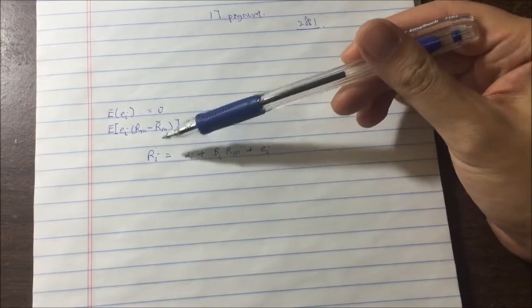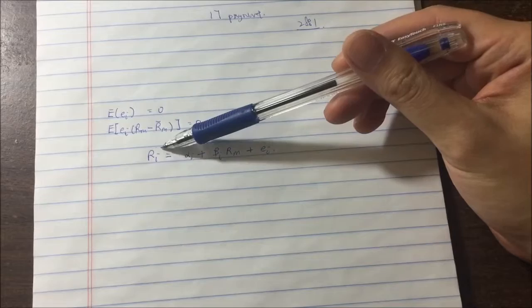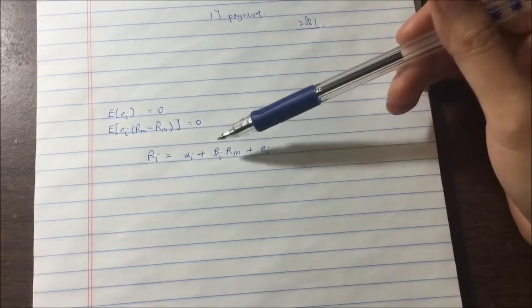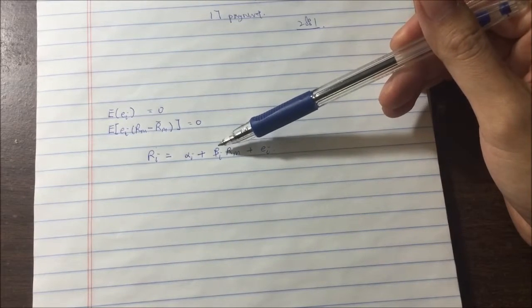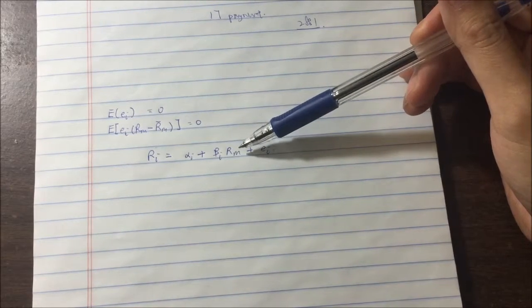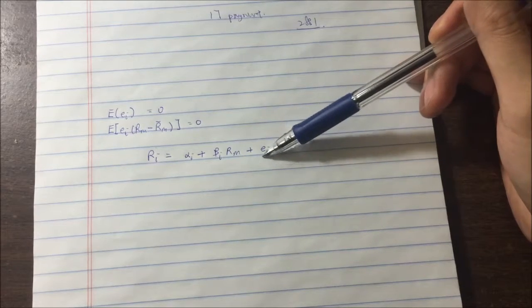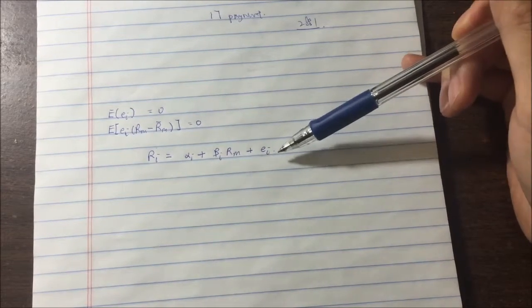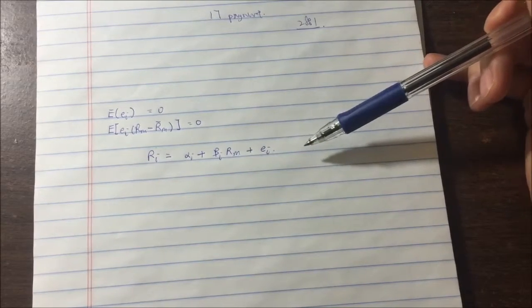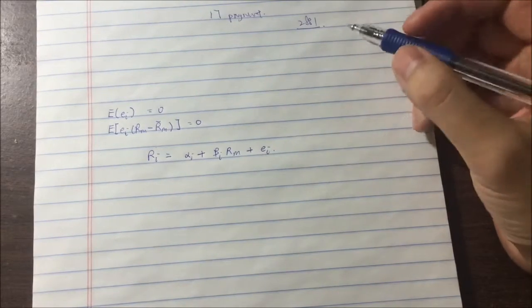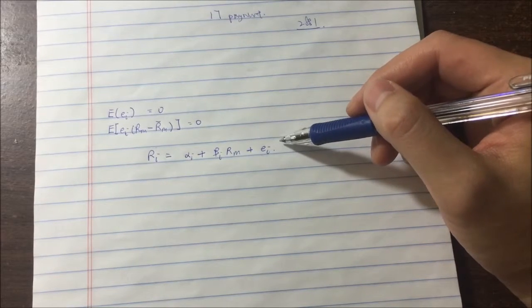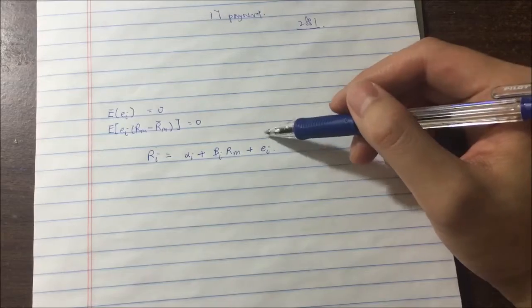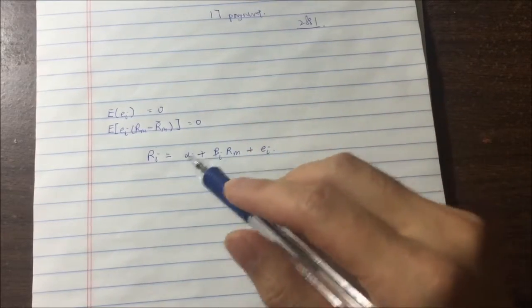It's basically saying the return of a stock is equal to some kind of alpha, which is not explained by any part of the equation, times the beta times the market premium, plus an unspecific term, which is the idiosyncratic variance of the company that is not explained by the market, perhaps by some kind of unknown variable that is hidden in the return of the company.